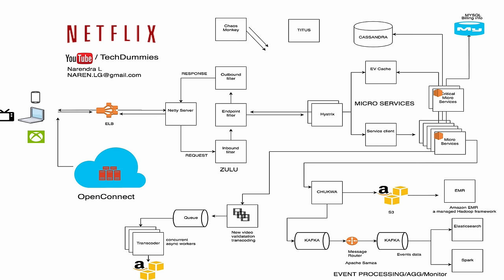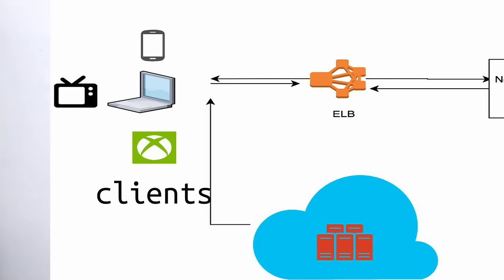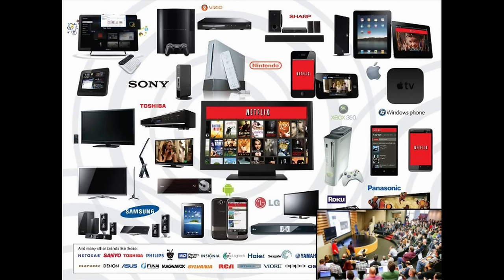Now that you understand what a CDN is, Open Connect is Netflix's own CDN. Netflix has placed thousands of servers in every country so that when a user requests a video, it plays from the nearest server. Let's see the system design for Netflix. Except for Open Connect, all other components are situated in AWS cloud. Netflix supports many different devices including smart TV, Android, iOS, gaming consoles, and a web app.